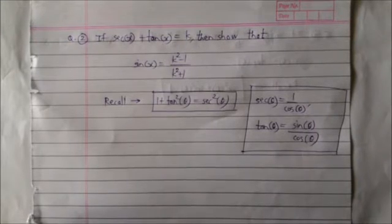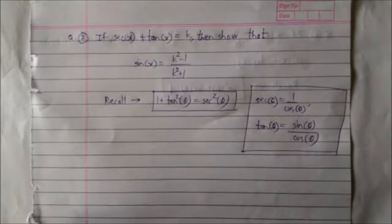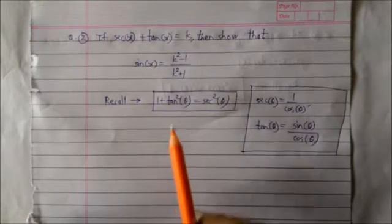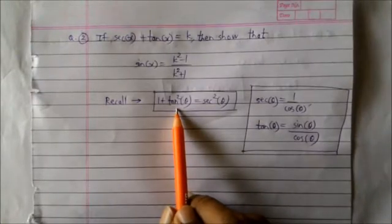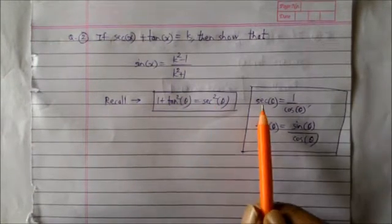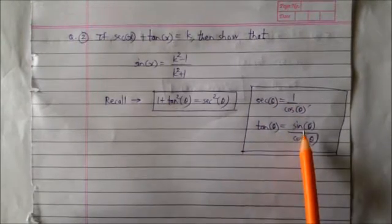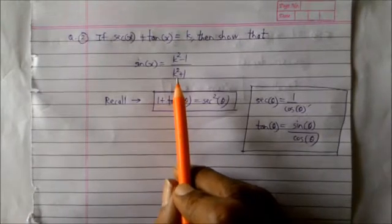Let us solve the second problem. If sec x plus tan x is equal to k, then show that sin x is equal to (k² − 1) upon (k² + 1). To solve this problem we will make use of the identity 1 + tan²θ = sec²θ, and the definitions sec θ = 1/cos θ and tan θ = sin θ/cos θ. Let us start by simplifying the right hand side.